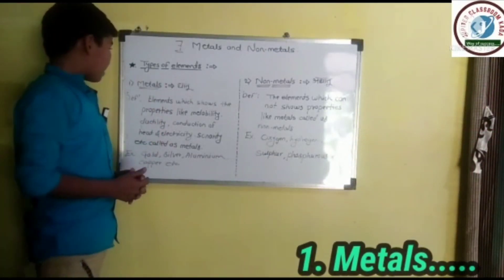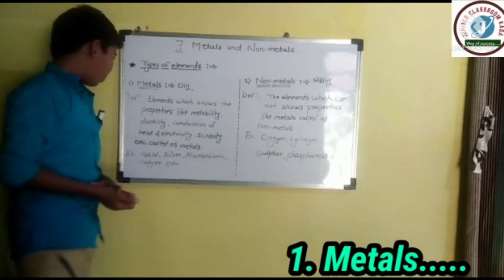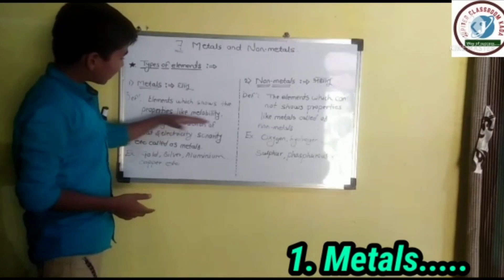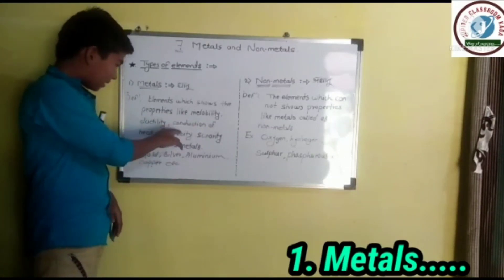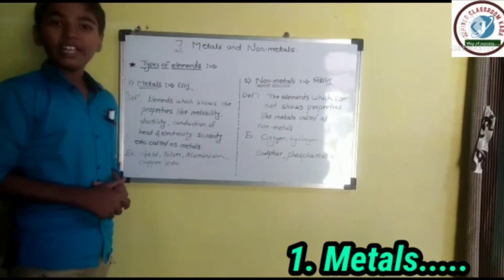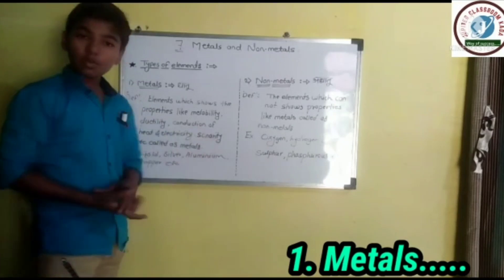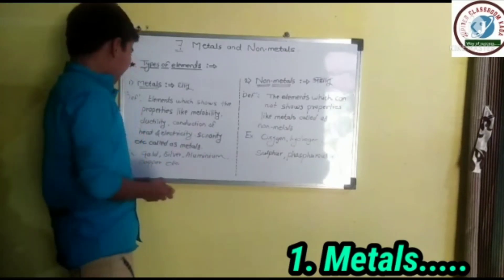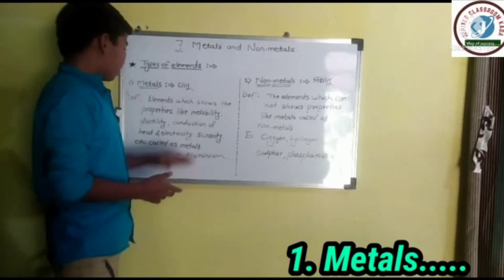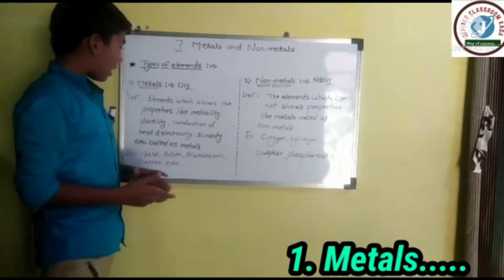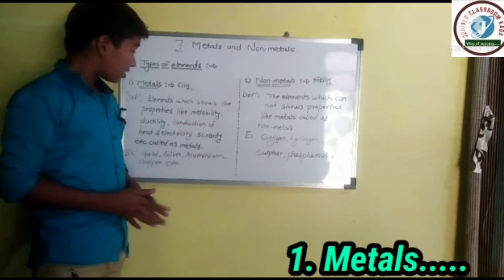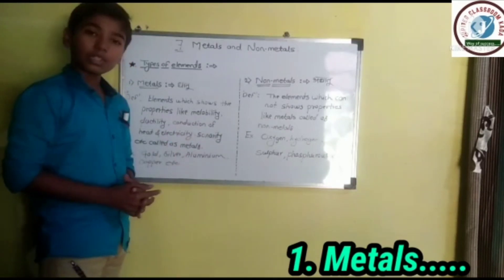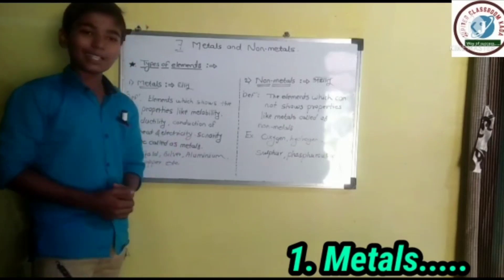The first type is metals. Metals means dhatu. Elements which show properties like malleability, ductility, conduction of heat and electricity, sonority, etc. are called as metals. Meaning, elements which show properties like malleability (vardhaniyata), ductility (tanyata), electrical conduction (vidyutvohan), heat conduction (ushnavohan), and sonority (nadmaita) are called metals.